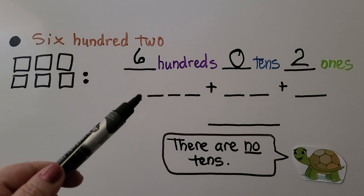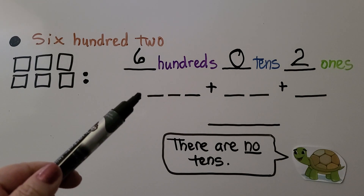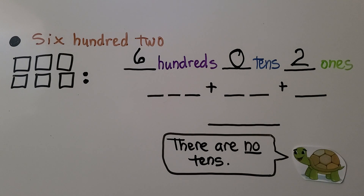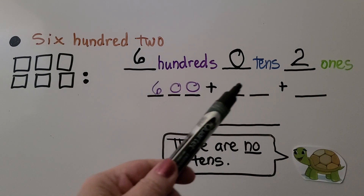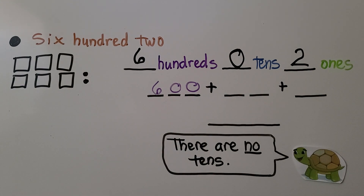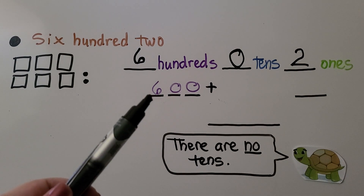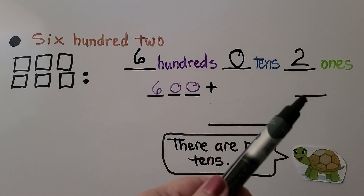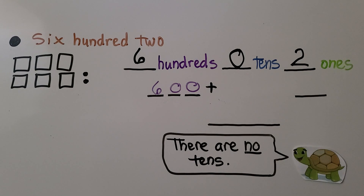We can write it in expanded form as 600. We don't have any tens, so we don't need a tens term — we can take that away. It's just 600 plus the two ones. In expanded form it's 600 plus 2. We can write it as the three-digit number in standard form.